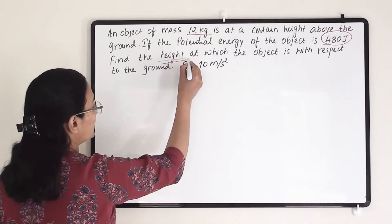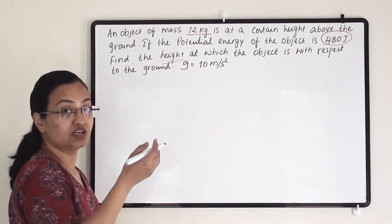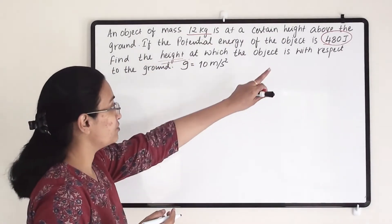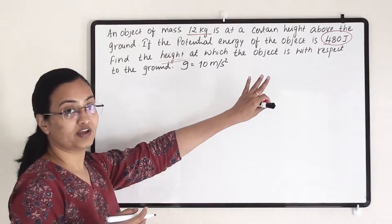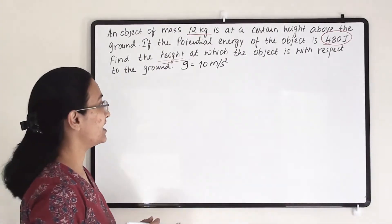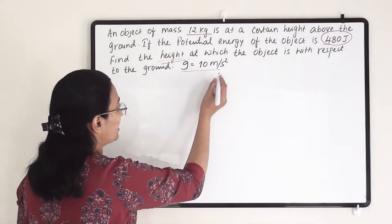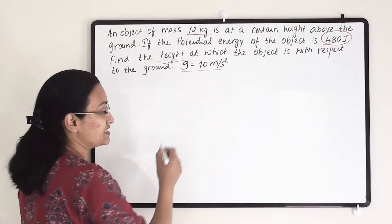So we have to find out the height—how much height has been raised so that the object got 480 joule potential energy. And G we have to take is 10 meter per second square.